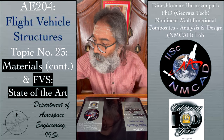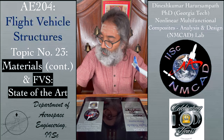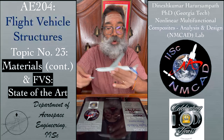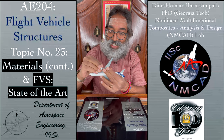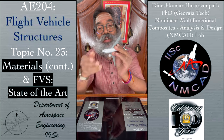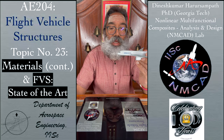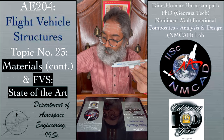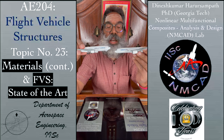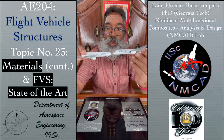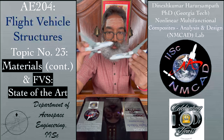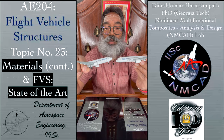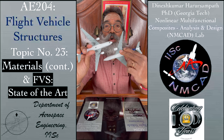Before that I'd like to showcase the two aircraft I've been using as demo models in the previous classes. This is the Airbus A350, which I've been using to demonstrate composite materials, and the Airbus A330-200, which I've been using to demonstrate typical metallic structures. Of course both have metals and composites, but there is a bigger amount of composites in the A350 compared to the A330. Both are 1:400 scale models.